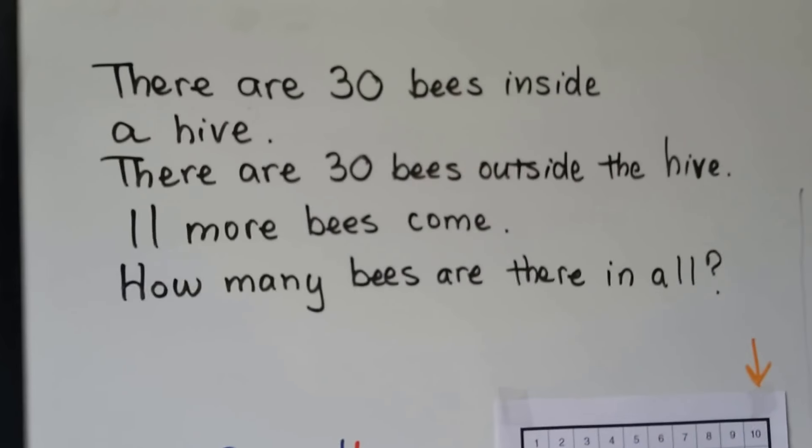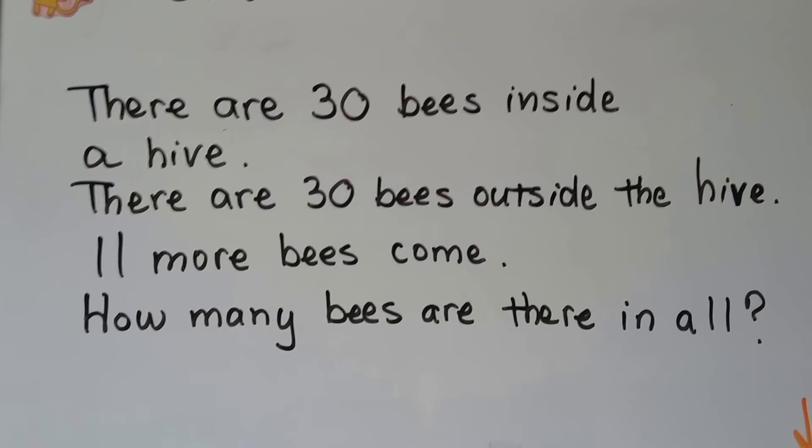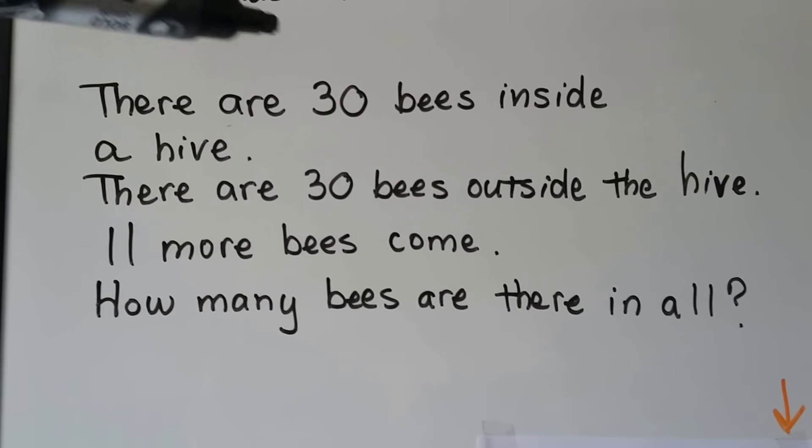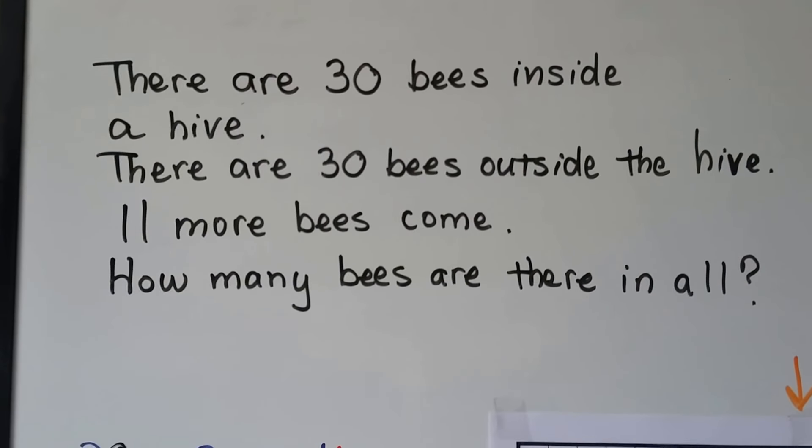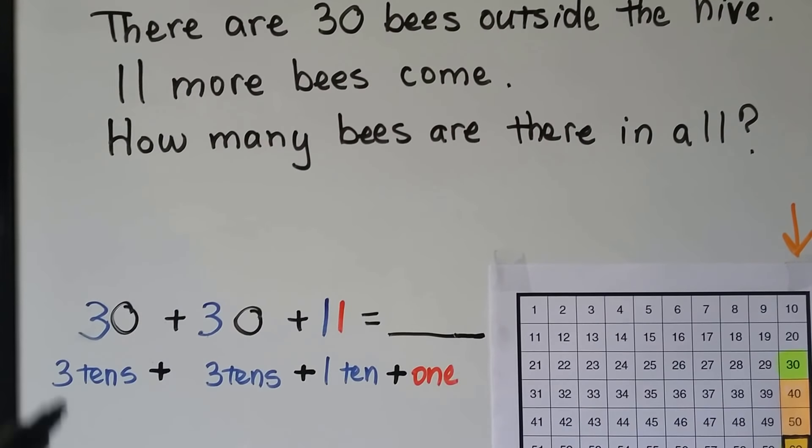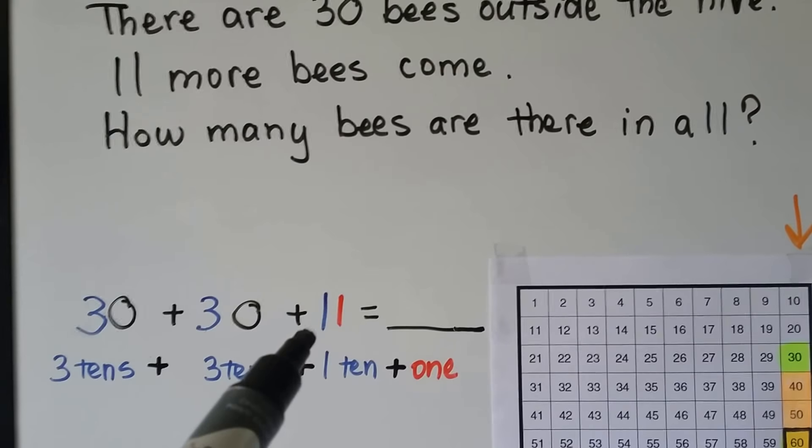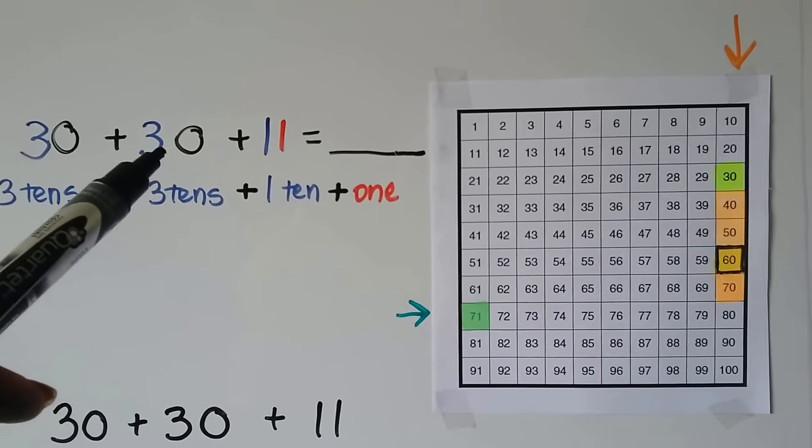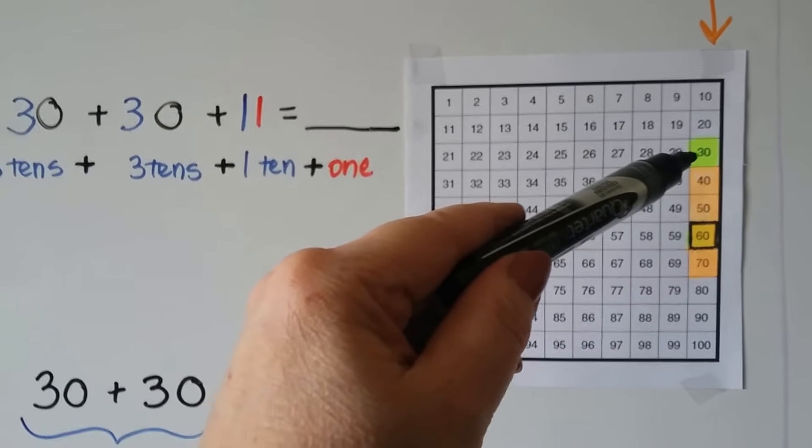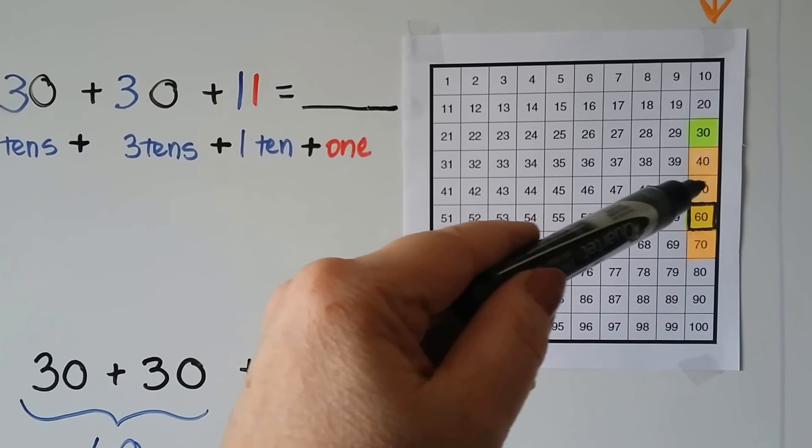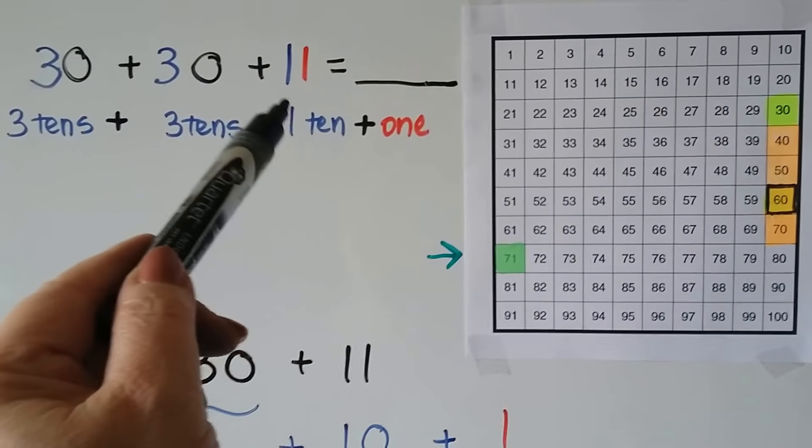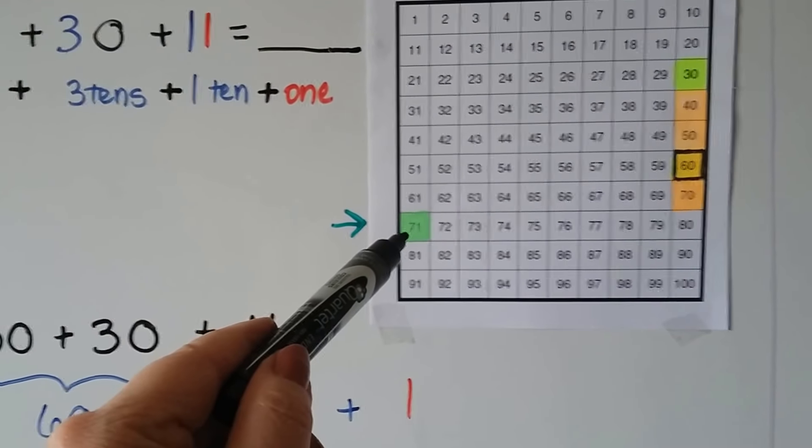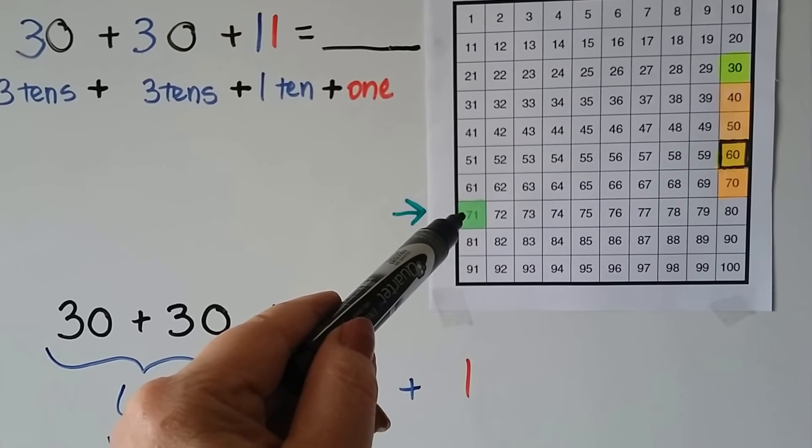There are 30 bees inside a hive. There are 30 bees outside a hive. 11 more bees come. How many bees are there in all? There were 30 and 30 and 11 more. 30 plus 30 plus 11. That's 3 tens plus 3 tens plus 1 ten plus 1 one, isn't it? We can start at the 30 and go down 3 more tens. 1, 2, 3. We land on 60. We can add the 1 more ten. That would be 70. We can add the 1 more. That would put us to the next column of 71.